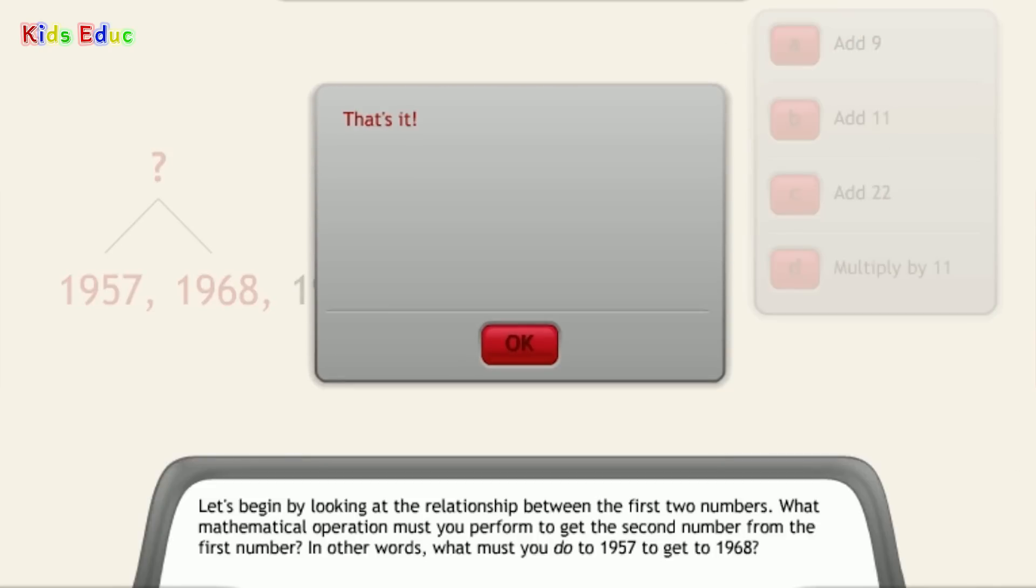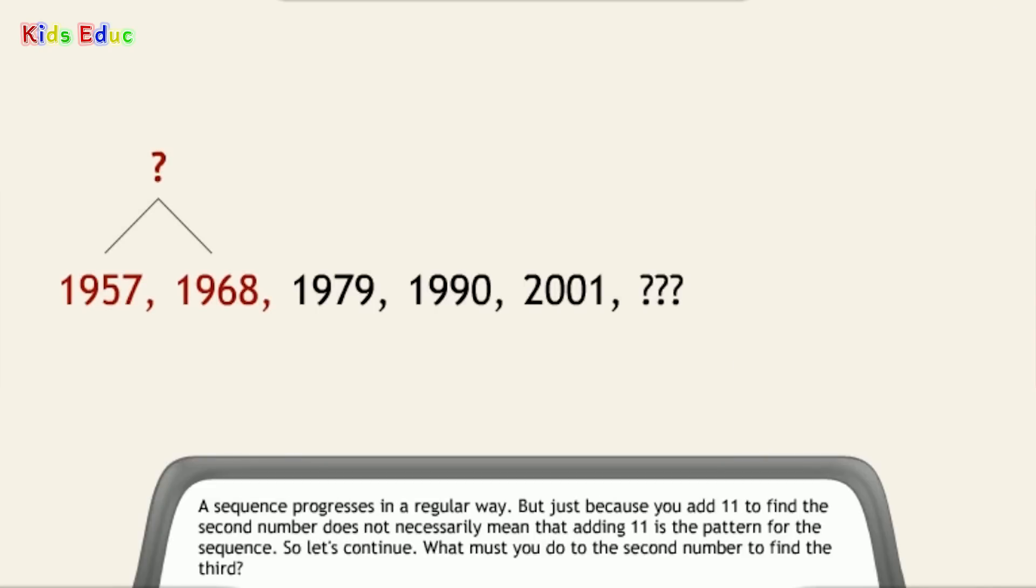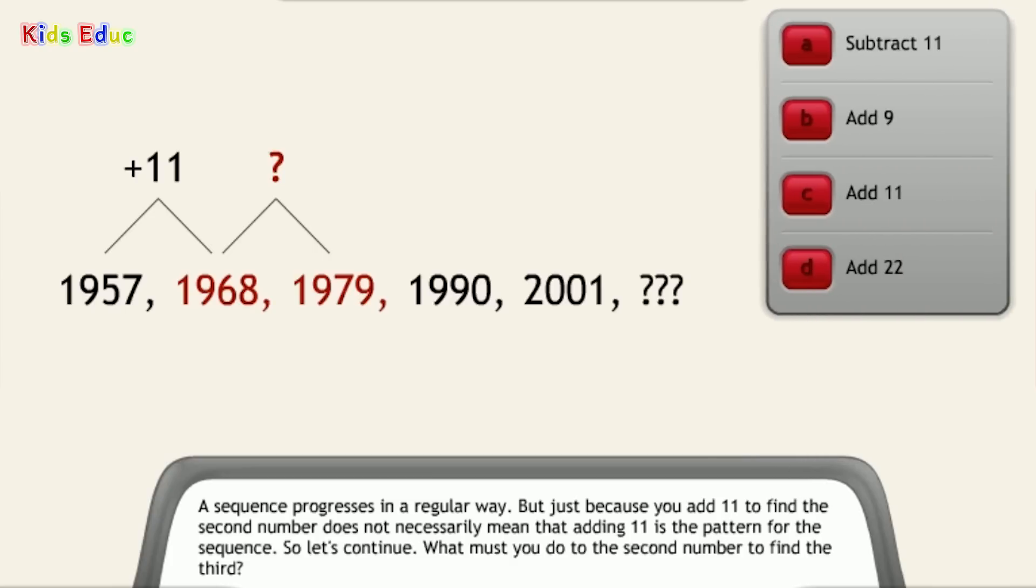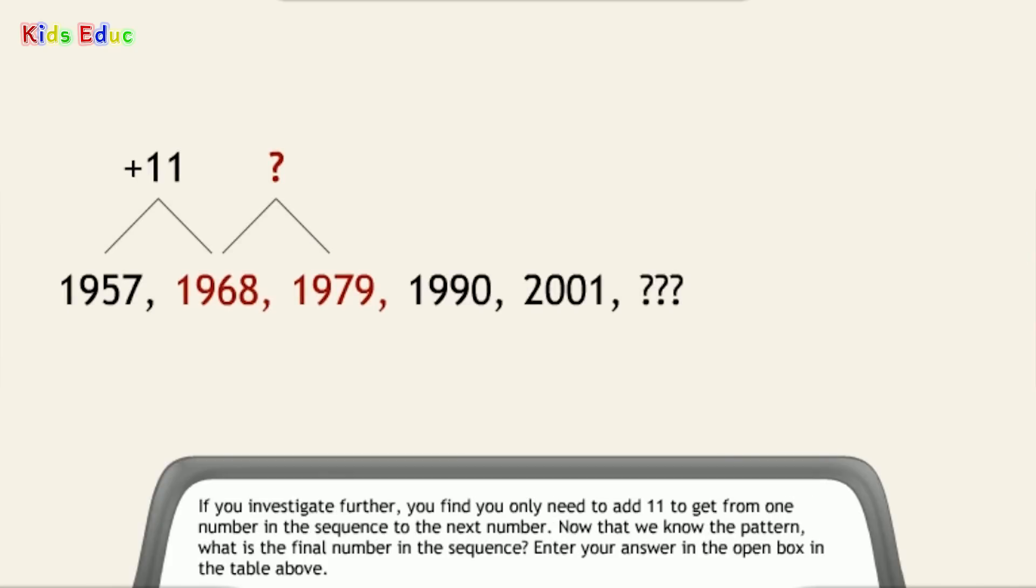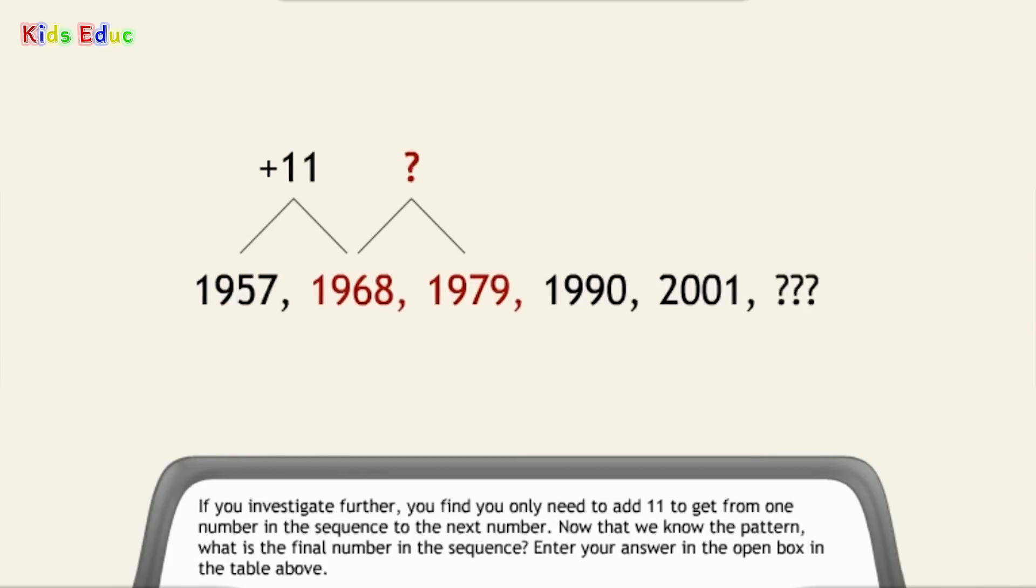That's it. A sequence progresses in a regular way. But just because you add 11 to find the second number does not necessarily mean that adding 11 is the pattern for the sequence. So let's continue. What must you do to the second number to find the third? Add 11. If you investigate further, you find you only need to add 11 to get from one number in the sequence to the next number.